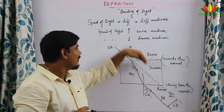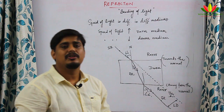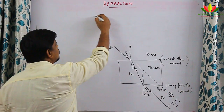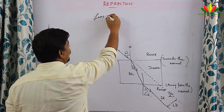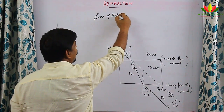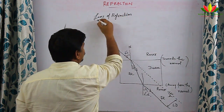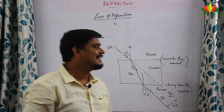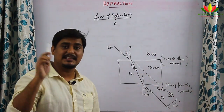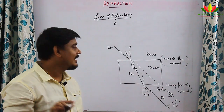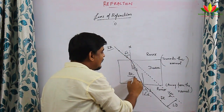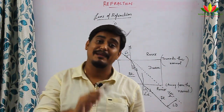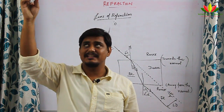If you extend the incident ray line, you will find it is always parallel to the emergent ray. The displacement between the incident ray and the emergent ray is known as lateral displacement — it is the displacement which the incident ray suffers due to the phenomenon of refraction. Now let us see the laws of refraction.